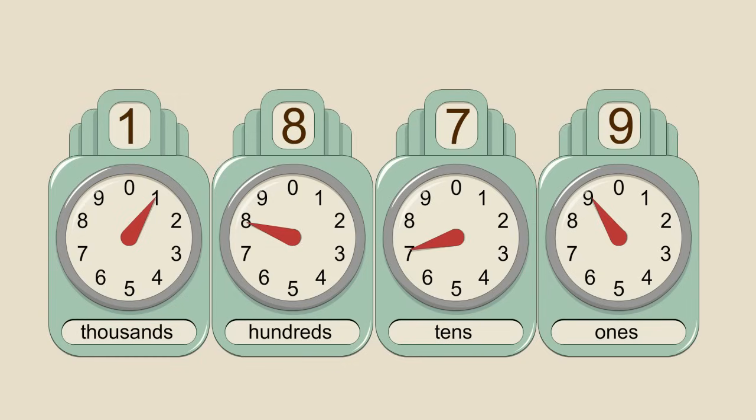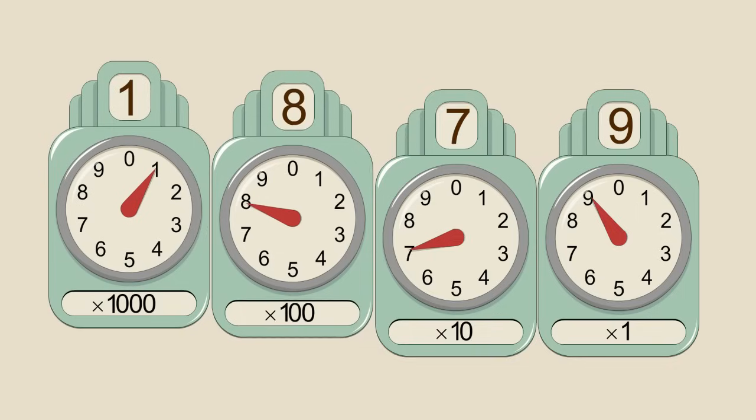In positional notation, the column occupied by a digit determines the multiplier for that digit. For example, in the decimal system, the value of the rightmost digit is multiplied by one. The digit in the next column to the left is multiplied by ten. The next digit is multiplied by one hundred, and so on. The value of a number is the sum of all its digits times their multipliers.